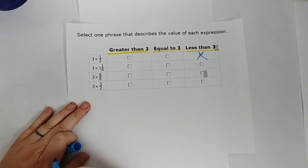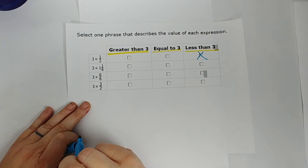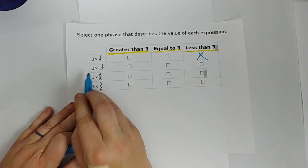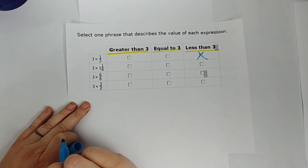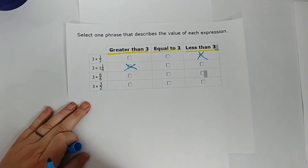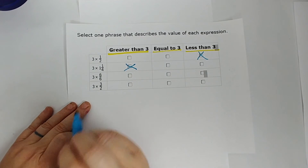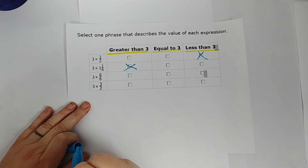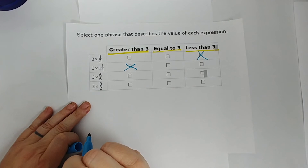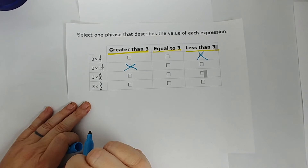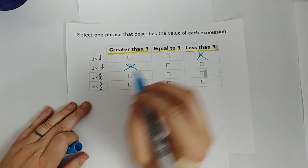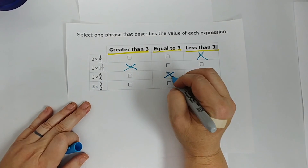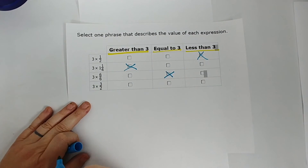Three times 1 and one fourth — a mixed number is always greater than 1, so multiplying 3 by it gives a number bigger than 3. Three times 6 over 6 — they love giving you things like 6/6, 7/7, 8/8. It's still just 1. Three times 1 equals 3. They cannot fool you with that. They think they're going to catch the kids who know 'multiply by a fraction means less than,' but you know the fraction has to actually be less than 1.